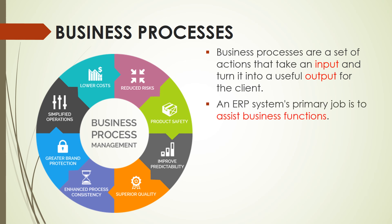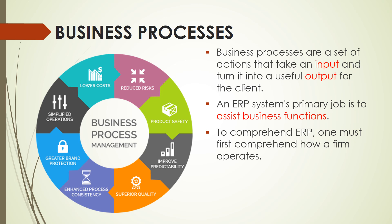An ERP system's primary job is to assist business functions. With ERP, the conduct of business activities and operations becomes optimized, efficient, and productive. To comprehend ERP, one must first comprehend how a firm operates. It is important that we understand how enterprises operate in order to employ appropriate ERP modules to aid the operations of the business.